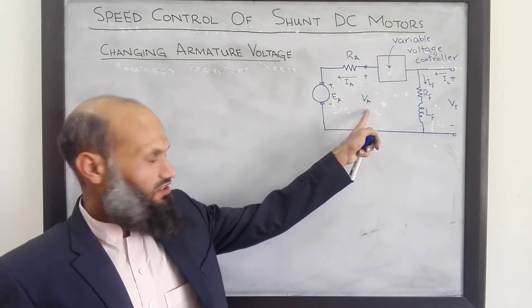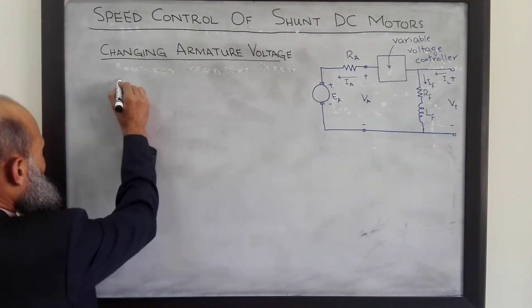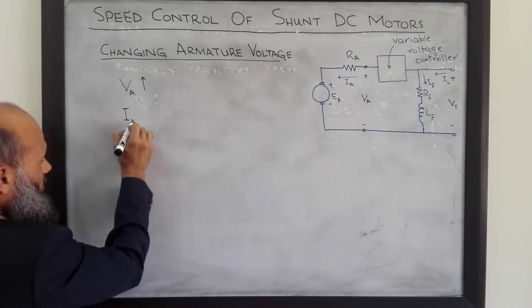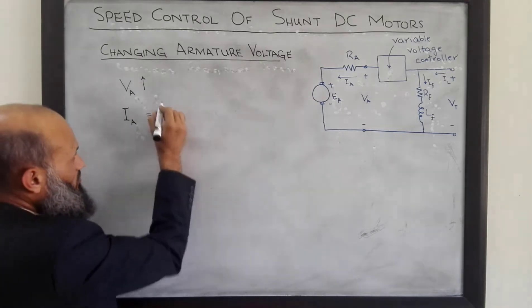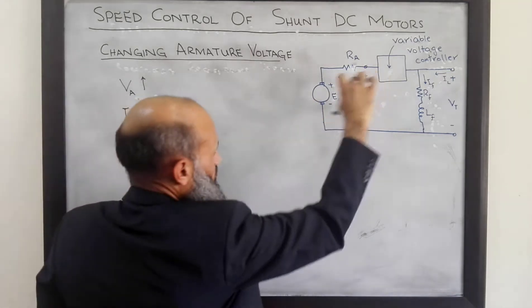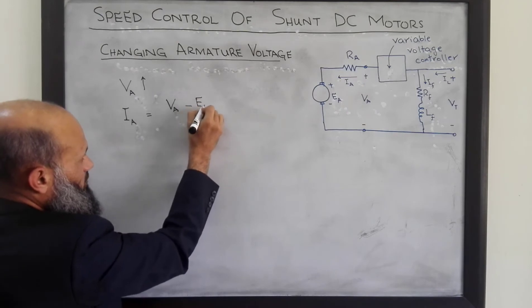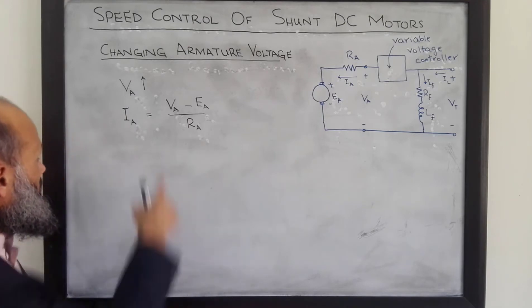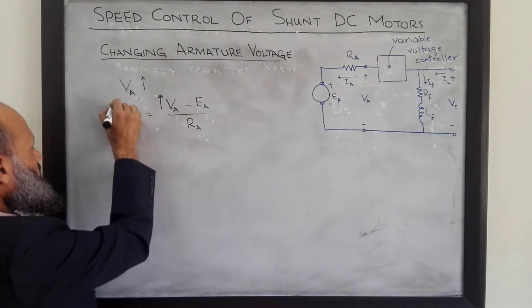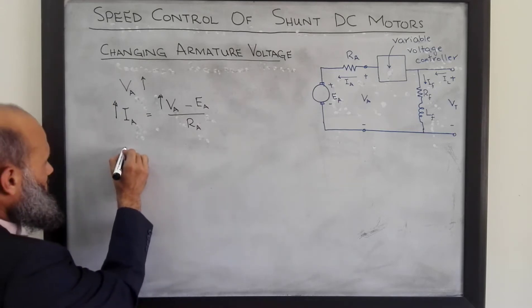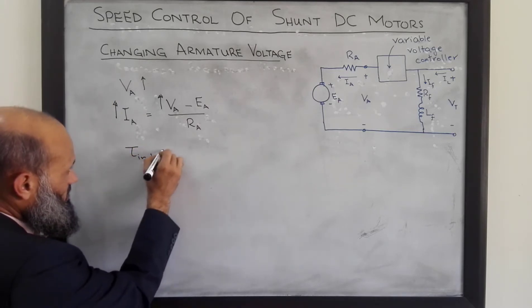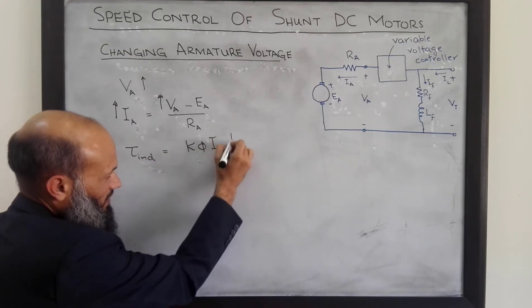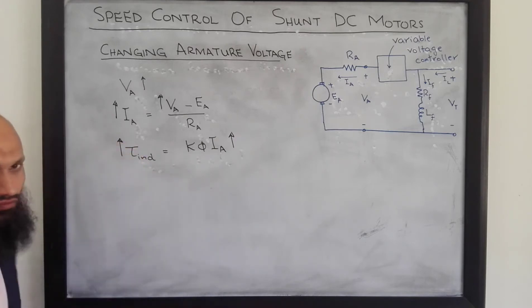When the armature voltage Va is increased, Ia will also increase, because Ia is given by (Va − Ea) divided by the resistance of the armature winding. So when Va is increased, Ia will increase, and since induced torque is given by Kφ·Ia, as Ia increases, induced torque will also increase.